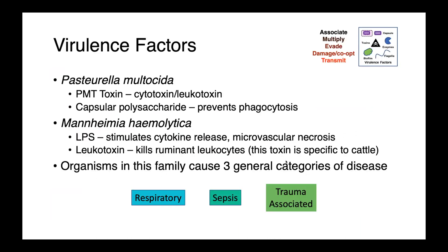We have a few key virulence factors recognized for some of our Pasteurellaceae. Pasteurella multocida produces a cytotoxin or leucocidin, as well as a capsular polysaccharide. This capsule prevents phagocytosis and, as we saw a few slides ago, can really easily be visualized on pure culture — those really mucilaginous, slimy-looking colonies.